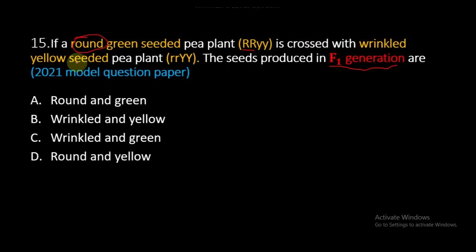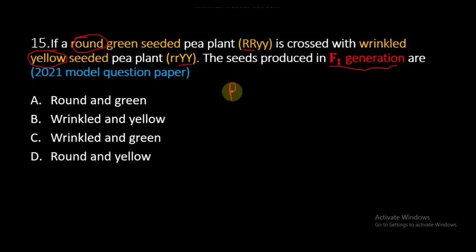It is crossed with the wrinkled yellow seeded pea plant. Capital Y capital Y is the dominant character and indicates yellow color. So yellow color is also the dominant one.